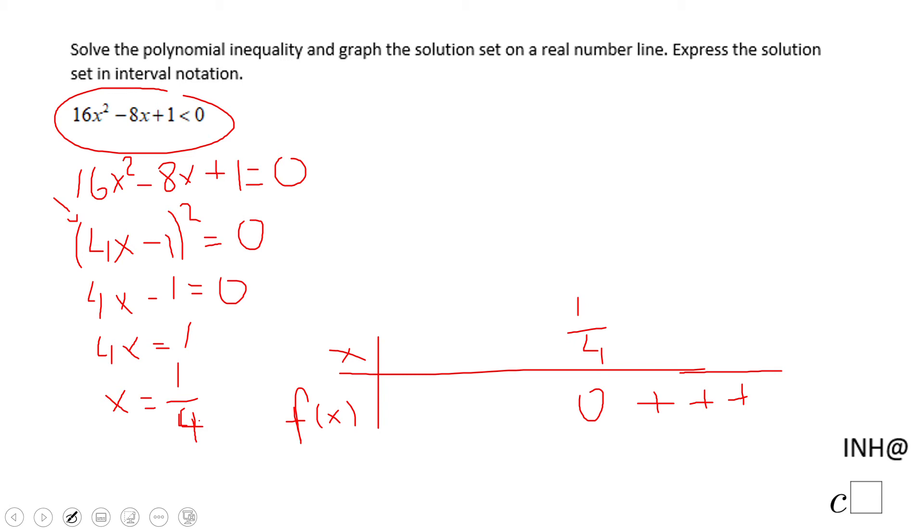I can do similar and pick a number like 0, which is to the left of 1/4, and you notice we get negative 1 squared, which is still a positive number. This function is only positive or zero at 1/4.